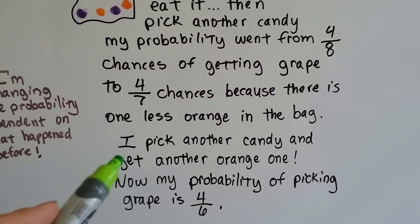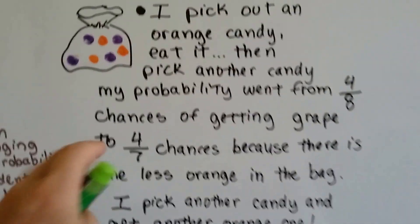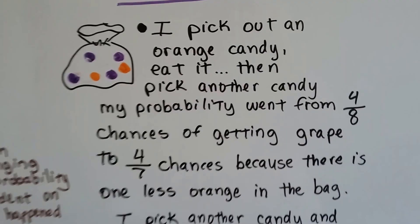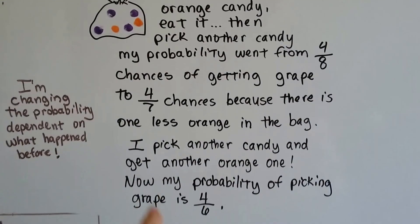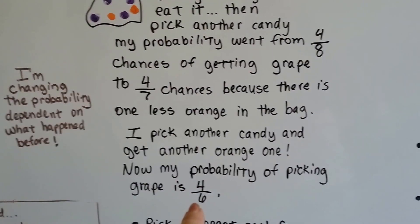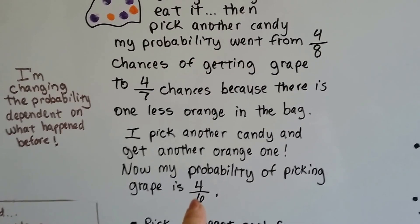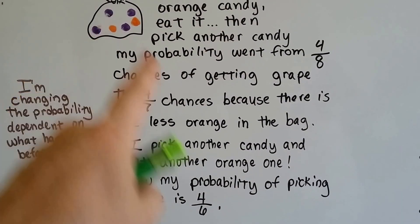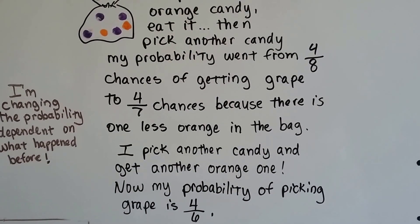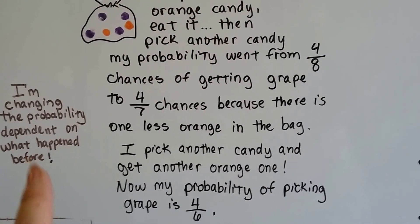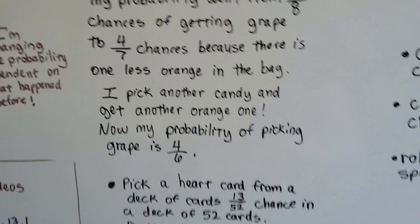Now let's say I pick out another candy and I get another orange one. Now there's six candies left. There's only two orange ones and there's four grape ones. Now my probability of picking grape is four out of six. See? I changed the probability depending on what happened before because I didn't put the candy back.